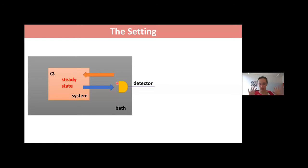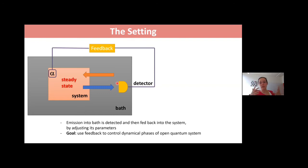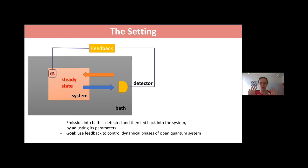The new ingredient I add is feedback. We go to the steady state — we wait for long times — and then I add feedback. What is this feedback? I have a detector taking photons of the light coming out of the atoms, analyzing them in some way, taking that information, and feeding it back to the system parameters — changing the system according to what is coming out, in order to control it, control the dynamical phase, or control the output photons.